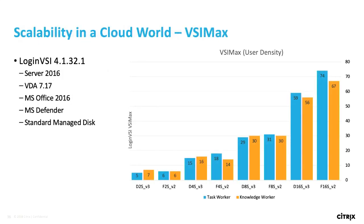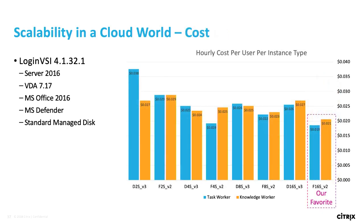For cloud scalability, we ran Login VSI loads across all Azure instance types, and the F16 series holds the most users. When you factor in cost per user, the F16s is our favorite — you get the most bang for the buck at around two cents per user per hour.